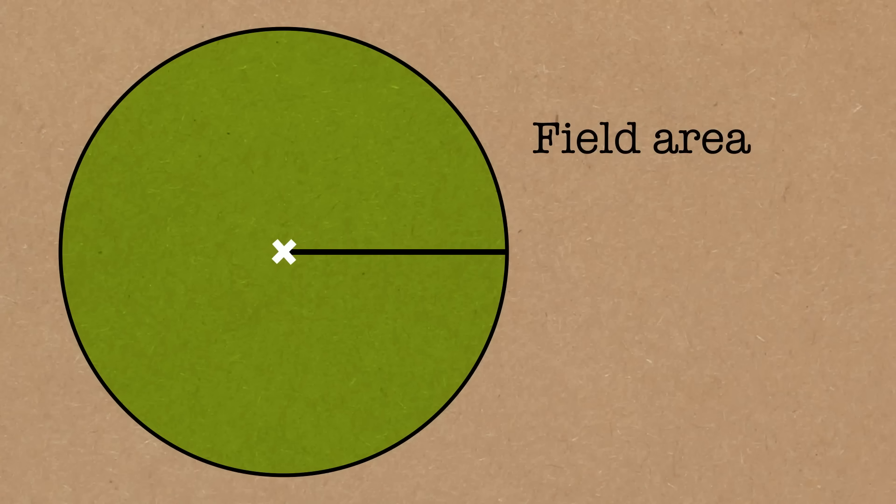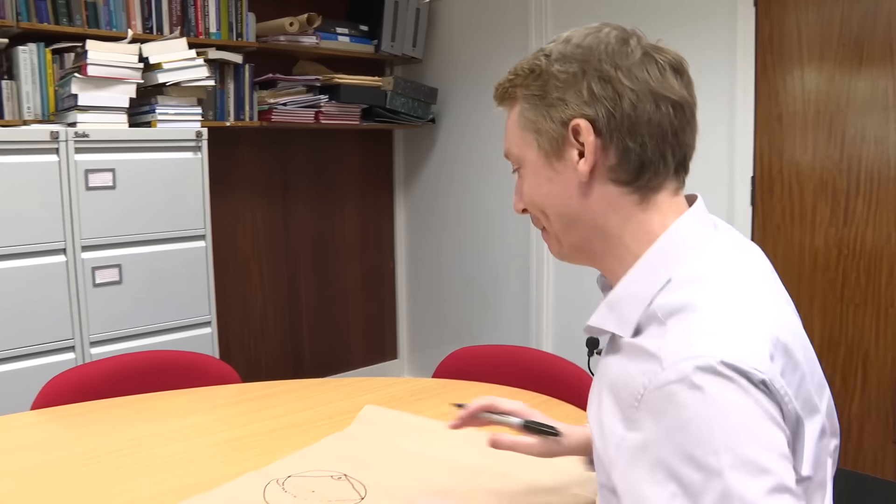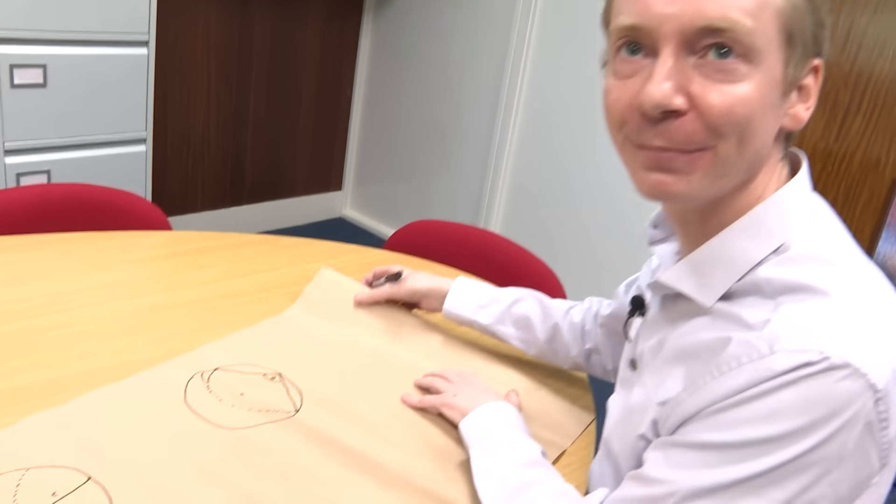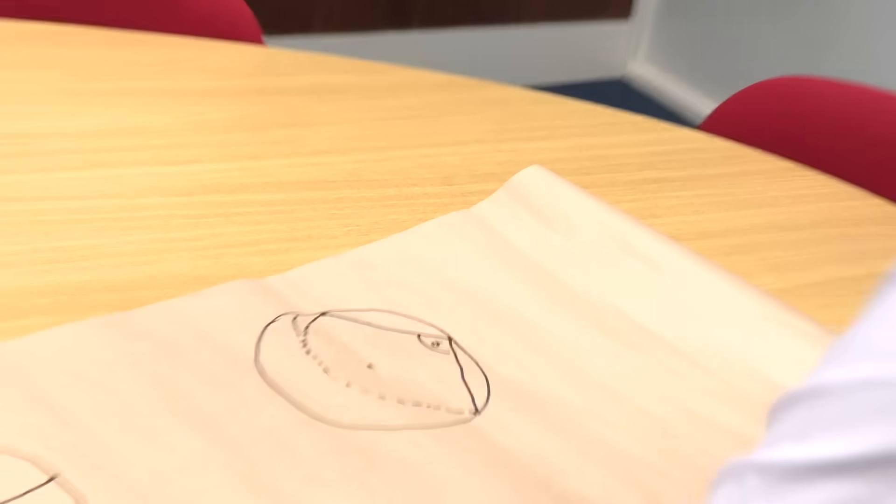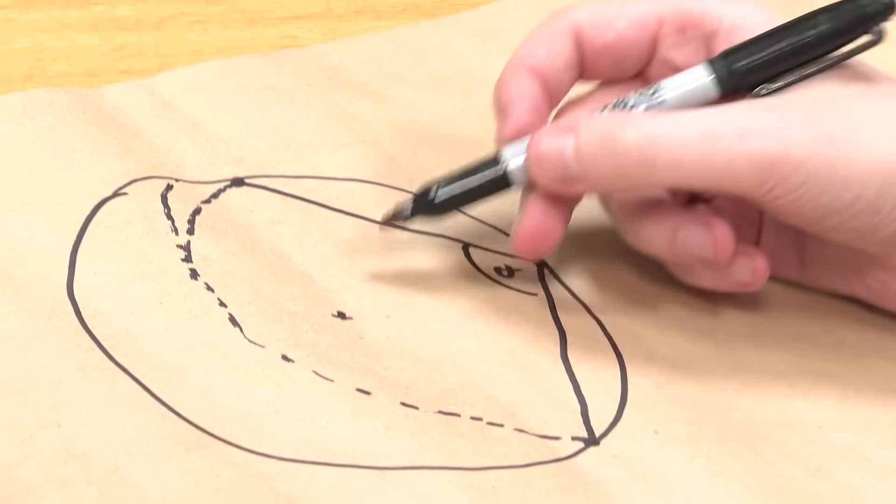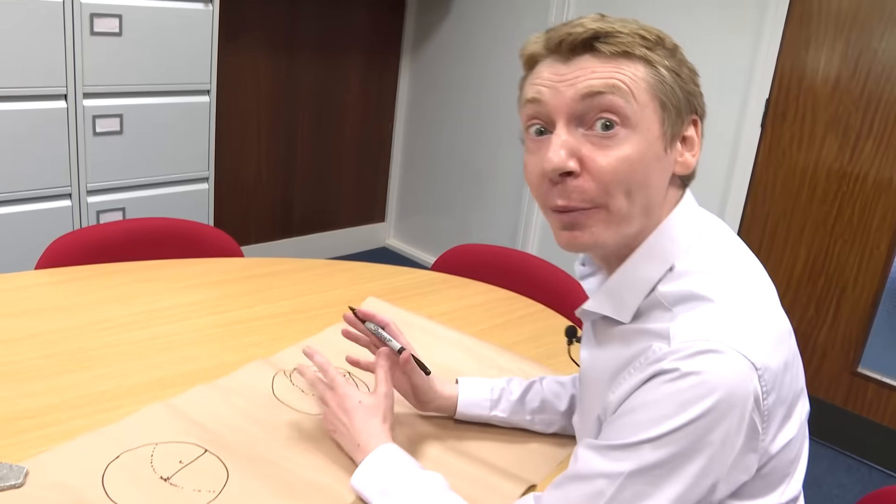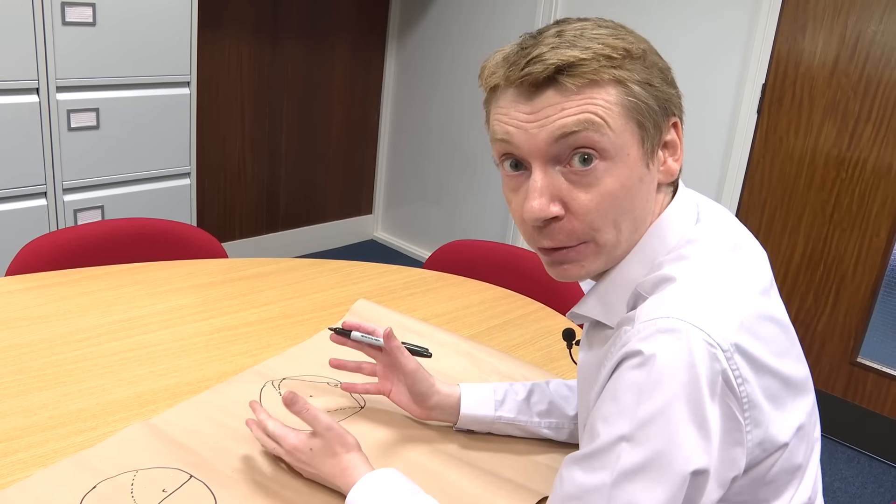So what is the area of the field? Well, it's a circular field with a radius of 1. So you use your traditional formula for working out the area of a circle. And the field is going to have an area of pi. But we want the goat to eat half the field, so pi over 2.